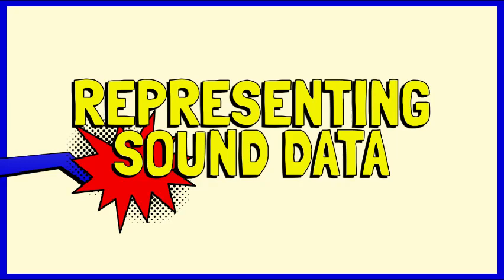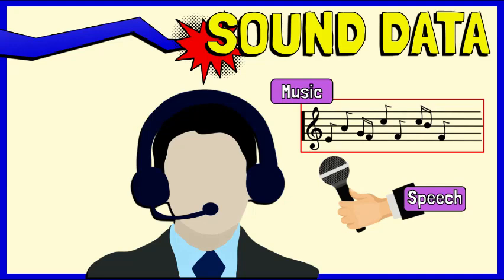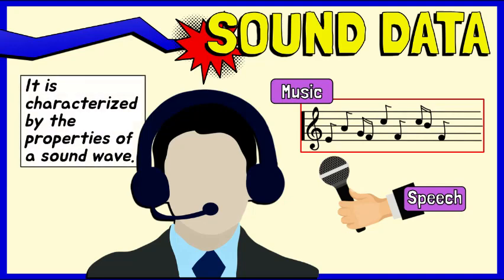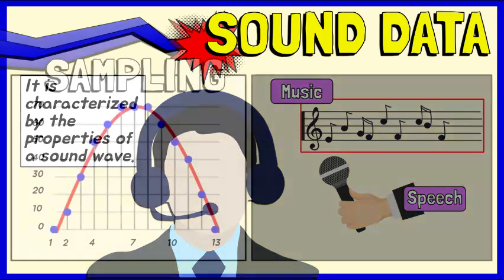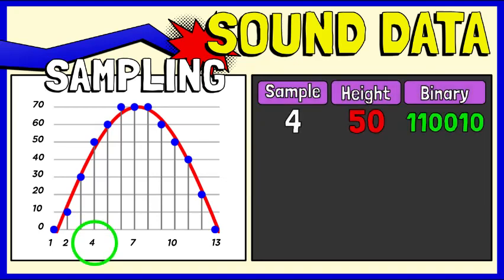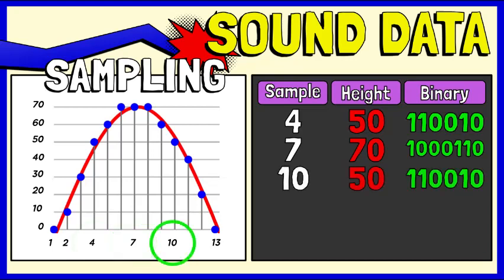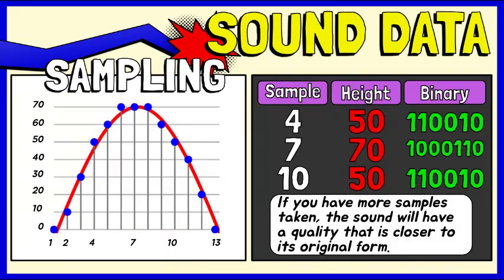Lastly, let's take a look at how bits can be used to store sound. Sound, such as music and speech, is characterized by the properties of a sound wave. You can represent sound waves digitally by the process called sampling. For example, this one-second sound wave was sliced into 13 samples. The height of the fourth sample is about 50, which can be converted into a binary number and stored. The more samples you take, the sound will have a quality closer to the original.